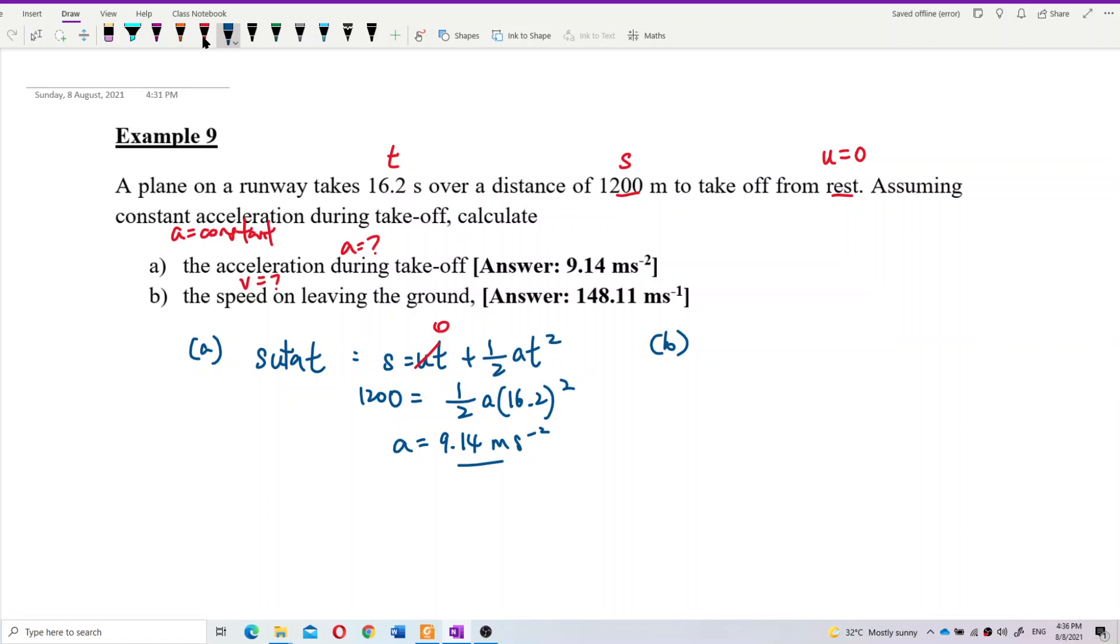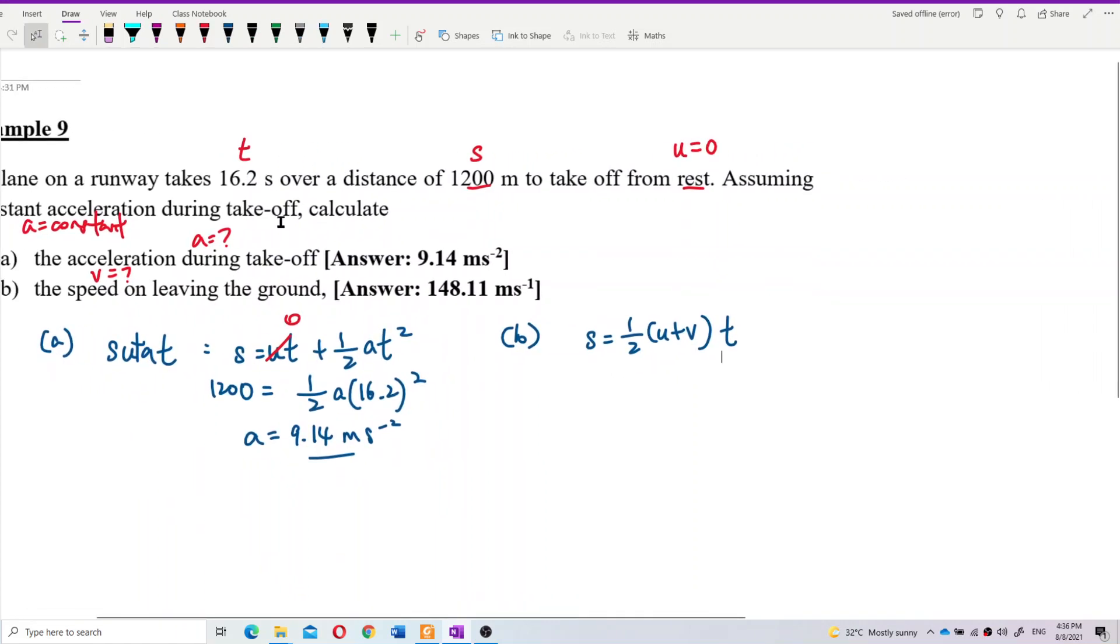So we have V, U, S, T. We can use the formula S equal to half U plus V T. Or we also can use the formula VOAT. Because we have acceleration already, we can use V equal to U plus A T.